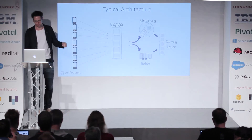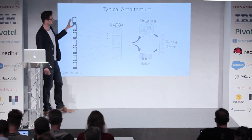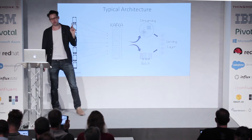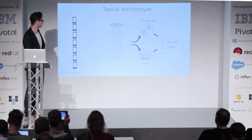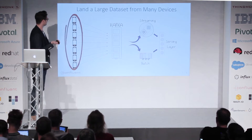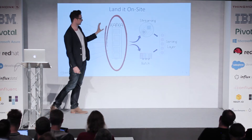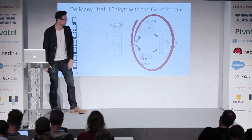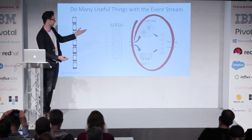This is a typical architecture that we see quite a lot. You've got a lot of devices, and effectively you're using Kafka as a buffer. You're getting that data on site into a big buffer where you can have a very large number of connections. Then from that, you push it either through a streaming pipeline or a batch pipeline and into a serving layer. This is sometimes termed the Lambda architecture — land any number of devices into Kafka, then either stream or batch into some serving layer where you apply analysis techniques.